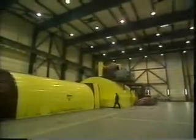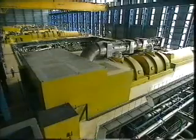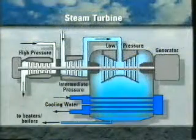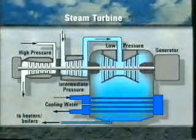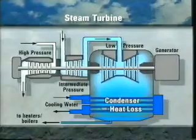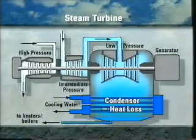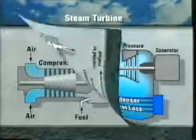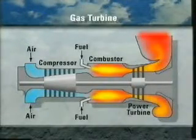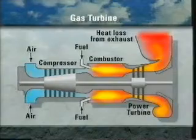Electricity is produced by harnessing energy to provide the motive force to rotate a generator. This can be achieved by using the expansion of either steam or gas through a turbine. Steam turbines operate at high pressures and low temperatures, but a substantial amount of energy is lost when the steam is condensed at the end of the steam cycle. Gas turbines operate at higher temperatures but lower pressures, and there is considerable heat loss from the high temperature of the exhaust gases.